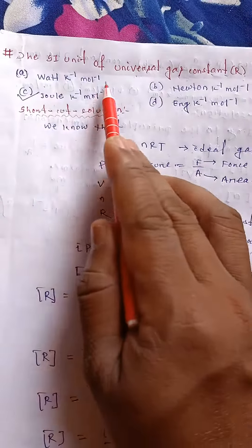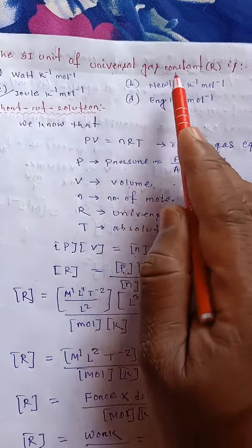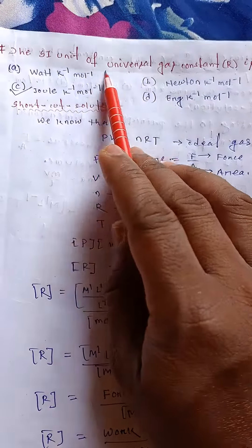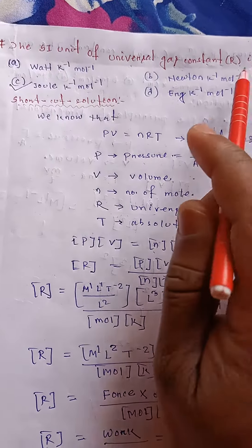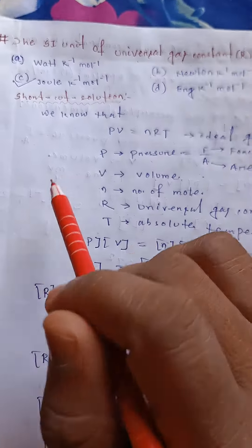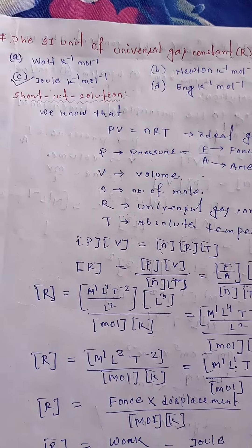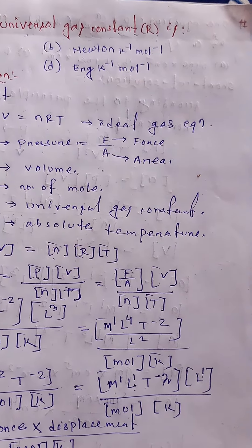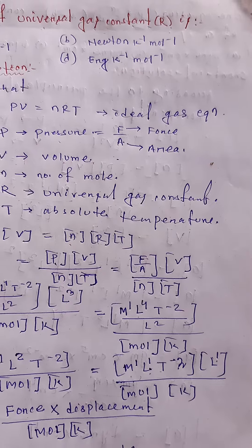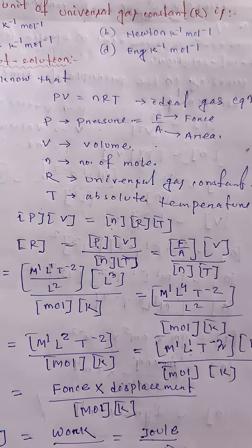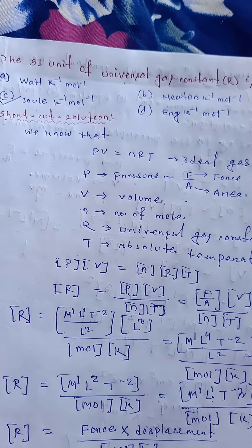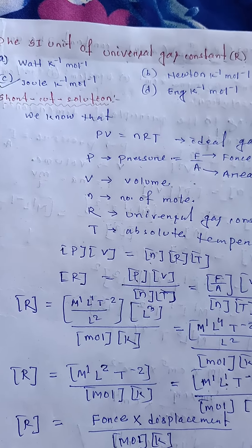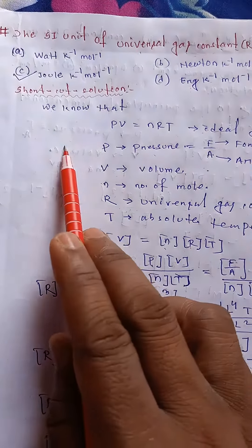The SI unit of universal gas constant R is how much? The four options given are: watt kelvin inverse mole inverse, joule kelvin inverse mole inverse, newton kelvin inverse mole inverse, or kelvin inverse mole inverse. Which one is correct?